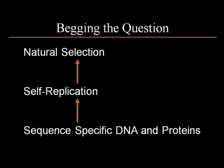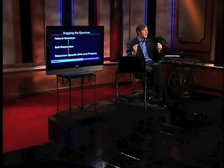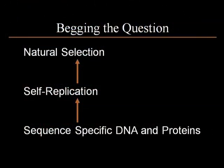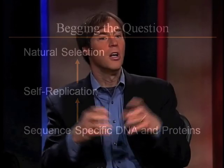To get natural selection going, you have to have self-replicating organisms. Natural selection depends upon pre-existing self-reproducing organisms. Even more fundamental than that, you've got to have information-rich DNA and proteins, because in all organisms in which reproduction takes place — think of cell division — you have pre-existing information-rich proteins and DNA molecules that run that process. So what were we trying to explain? The origin of DNA and proteins in the first place. And we've invoked a process that presupposes the existence of those very things.